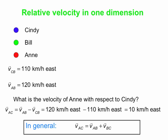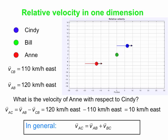Now let's go through that all again using a pictorial method with color coding. Cindy is blue, Bill is green, and Ann is red. Here's what things look like from Bill's reference frame — Bill is on a bridge overlooking the Mass Pike, looking down, and he sees Ann in red and Cindy in blue traveling east past him.